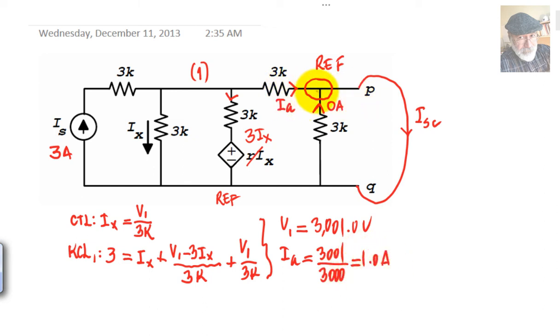But that 1 amp plus 0 is the short circuit current, and that current is then 1 amp. That is the solution to part B of the exercise.